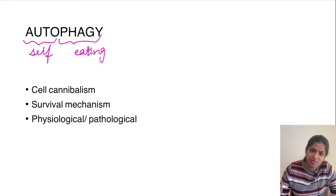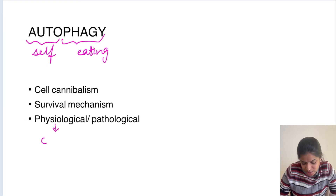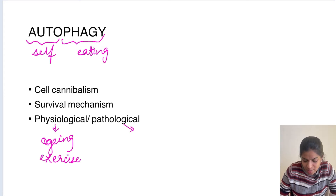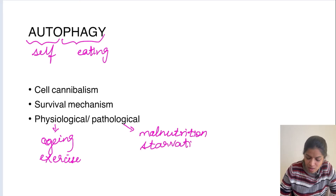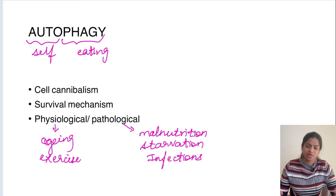Autophagy is basically a survival mechanism and it can happen both in physiological and pathological conditions. Physiologically it occurs during aging and exercise, while pathologically it occurs during malnutrition, starvation, and infections. In these conditions the cell will eat its own contents to survive.